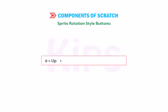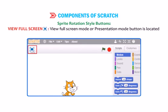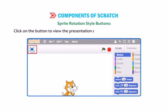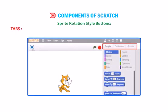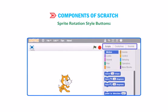The direction values are: 0 for Up, 90 for Right, 180 for Down, and -90 for Left. The View Full Screen or Presentation Mode button is located at the top left corner of the stage. Click on it to view your project in full screen mode. Scratch provides three different tabs: Scripts, Costumes, and Sounds. All three tabs have different tasks to perform.